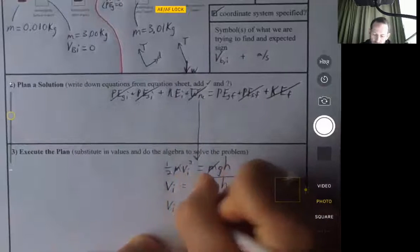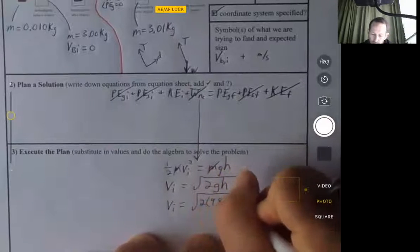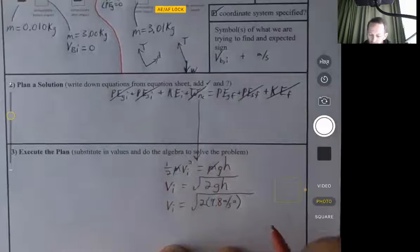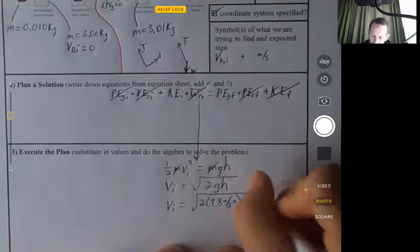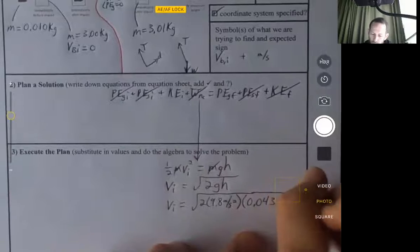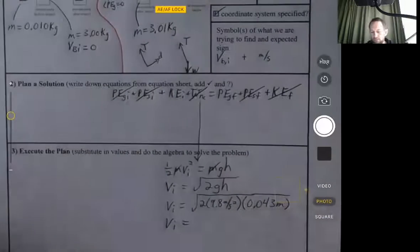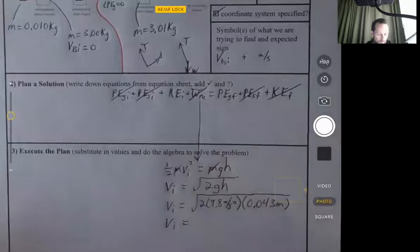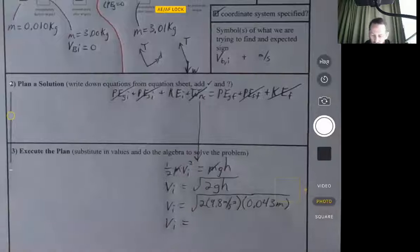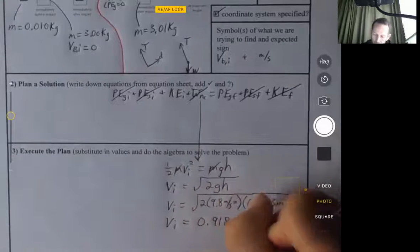So V sub I will be equal to the square root of 2 times 9.8 meters per second squared. Remember, G is a scalar. And the height, which I already converted into meters, is 0.043 meters. So now I just need to calculate this value. And you can check me on this.